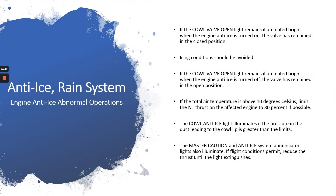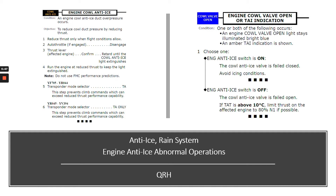If flight conditions permit, reduce thrust until the light extinguishes. The QRH for a cowl anti-ice amber light — engine cowl anti-ice duct overpressure — the objective is to reduce cowl duct pressure by reducing thrust. First, reduce thrust only when flight conditions allow. Autothrottle, if engaged, disengage. Then the thrust lever on the affected engine — confirm retard until the cowl anti-ice light extinguishes. Run the engine at reduced thrust to keep the light extinguished. Note: do not use FMC performance predictions. Transponder mode selector to TA — this step prevents climb commands which can exceed reduced thrust performance capability.